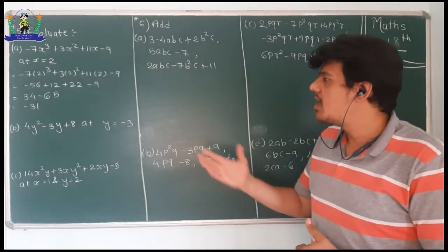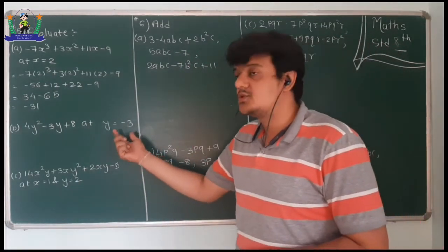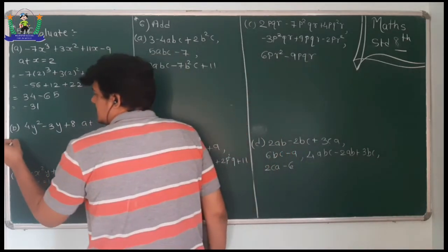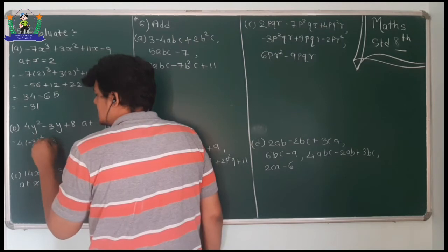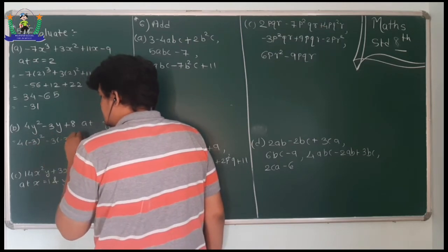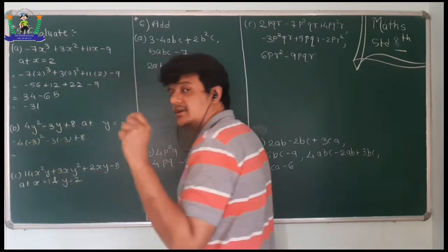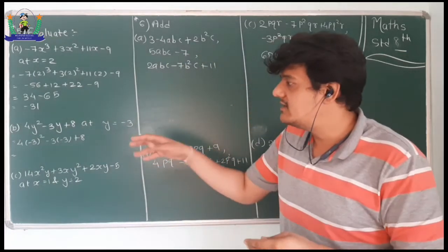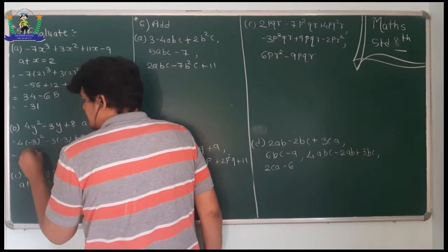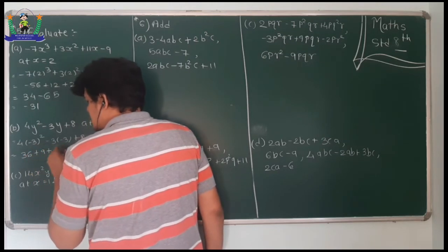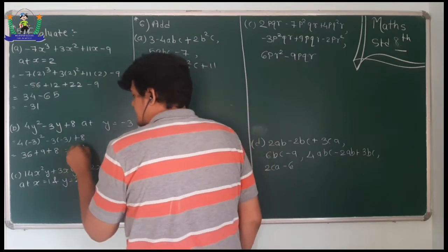Now we move to the next one, substituting minus 3. It becomes: 4 into (minus 3) square minus 3 into (minus 3) plus 8. So minus 3 into minus 3 is 9, and 4 nines are 36. Then 36 plus 9 is 45, and 45 plus 8 gives 53.